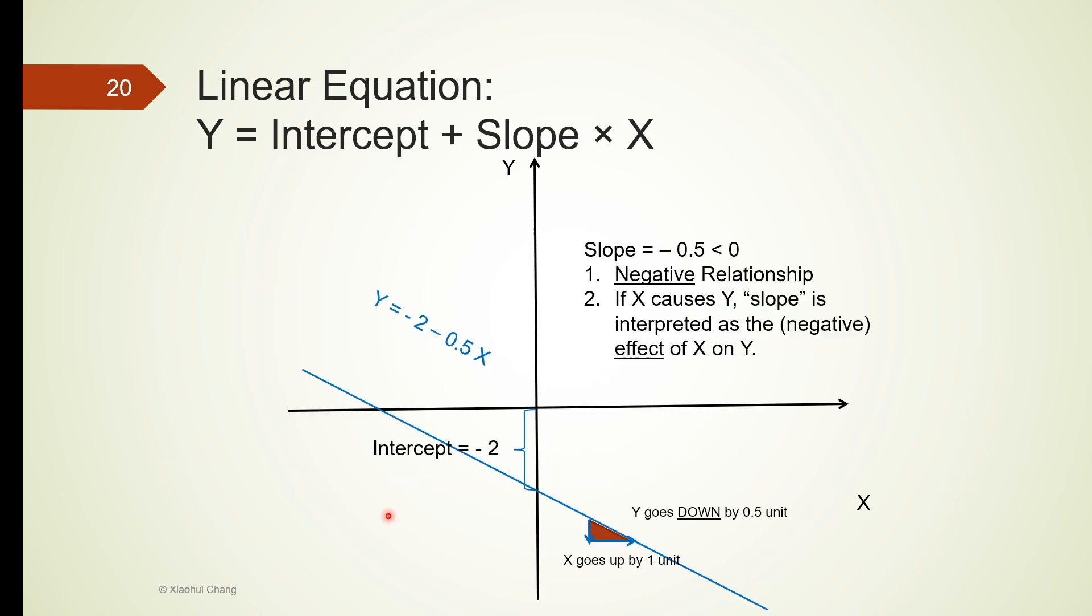The second case we consider is when the slope is negative half. That means y decreases when x increases. And more specifically, for every one unit increase in x, y drops by half units.